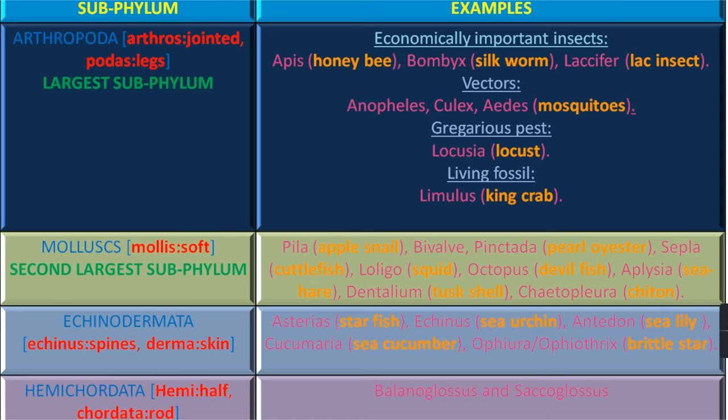Sub-phylum Molluscs, where Mollusca means Soft — it is the second largest sub-phylum. Examples are Pila (Apple Snail), Pinctada (Pearl Oyster), Sepia as Cuttlefish, Loligo as Squid, Octopus as Devilfish, Aplysia as Sea Hare, Dentalium (Tusk Shell), and Chaetopleura (Chiton).